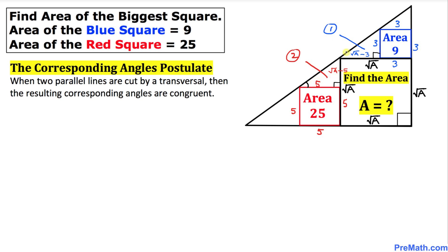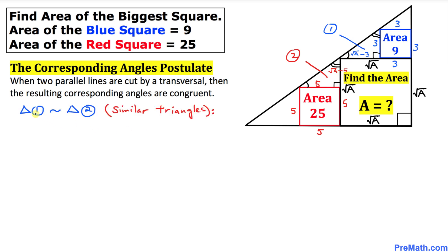Here is our corresponding angles postulate. Looking at the angles in triangle one and triangle two, they are corresponding angles and according to this postulate they are congruent. Likewise, the other corresponding angles are also congruent, and moreover both triangles are right triangles. Therefore triangle one and triangle two are similar triangles.